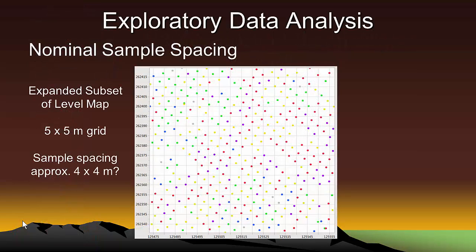Okay, secondly, we need to determine the nominal sample spacing of our data. We know the nominal vertical spacing between the blast hole samples is bench height, or 4 meters. But what about the nominal horizontal sample spacing?